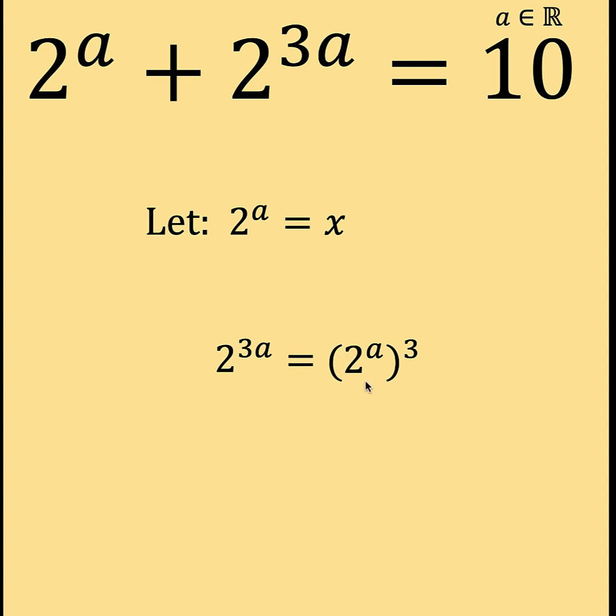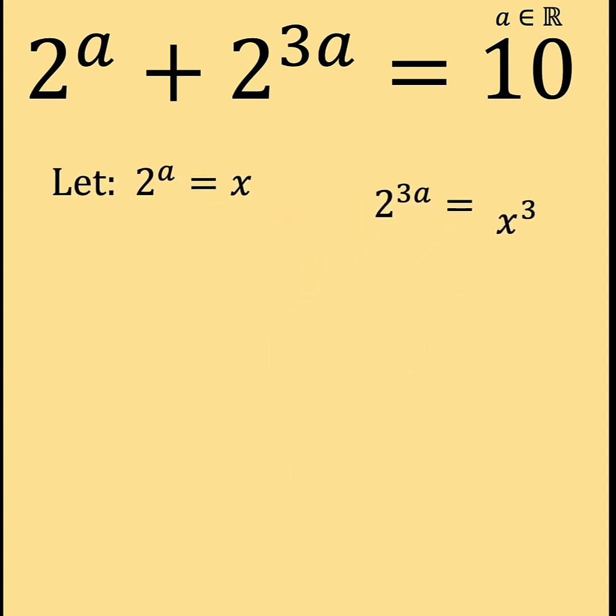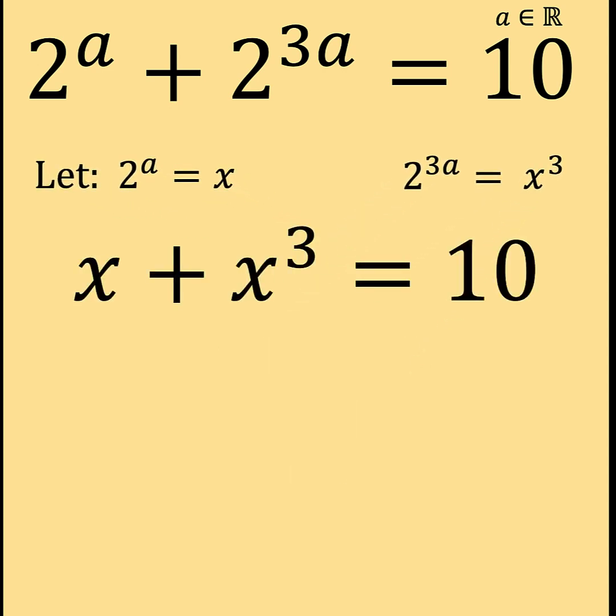Because when you have the quantity 2 raised to A all raised to the third, we can apply the power of power law of exponent by copying the base 2 and multiplying the exponents A and 3 to get 3A. So the first term 2 raised to A is now X. The second term 2 raised to 3A is now equal to X cubed because 2 raised to A equals X and we just copy the exponent 3. With this substitution, we can now rewrite the original equation as X plus X cubed equals 10.